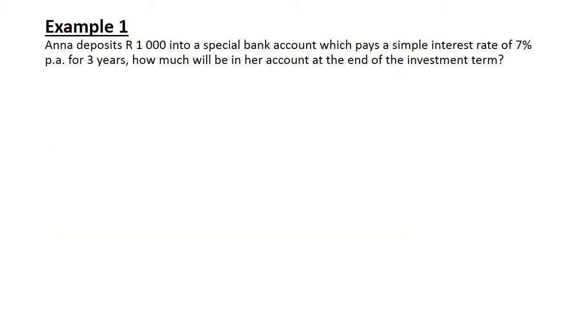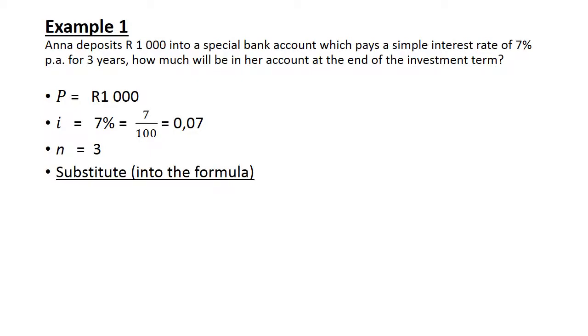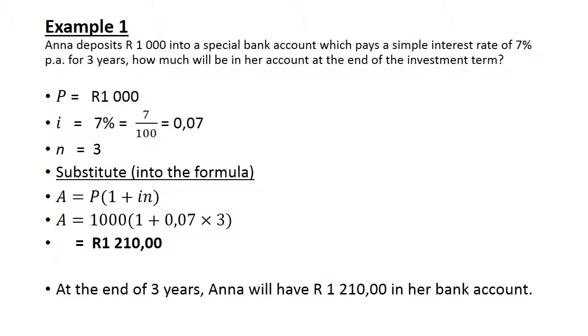So let's do an example. Anna deposits R1,000 into a special bank account which pays a simple interest rate of 7% per annum, which means per year. She is doing this for 3 years. How much will be in her account at the end of the investment time? So P is what you start with, the R1,000. i is my interest rate, 7%. You cannot use 7%, you have to convert it to 7 over 100, which is 0.07. n is for 3 years. Then you substitute into the formula. A is 1,000, 1 plus 0.07 times 3, and your final answer is R1,210. So at the end of 3 years Anna will have R1,210 in her bank account.